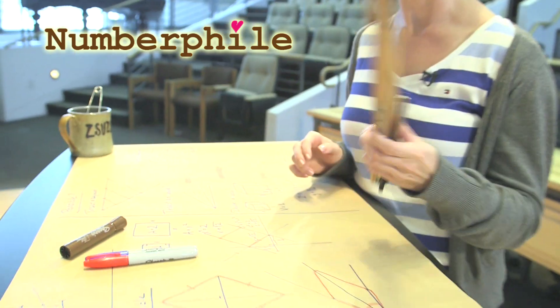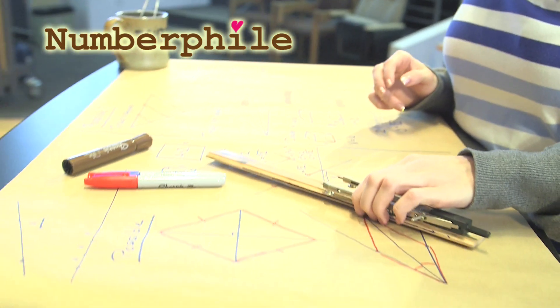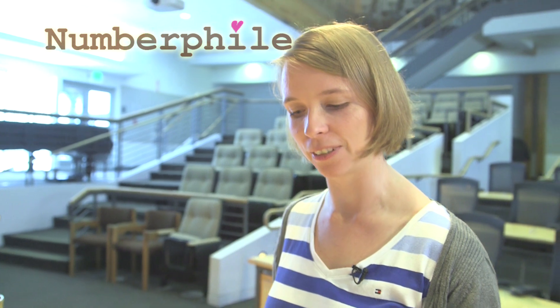Euclid had the straight edge and the compass, those were the tools that he had available. He didn't have very good paper.